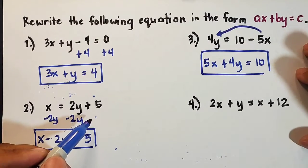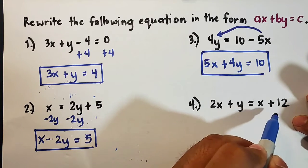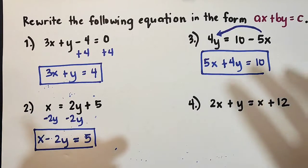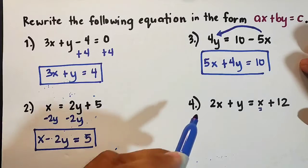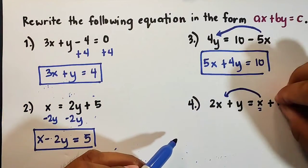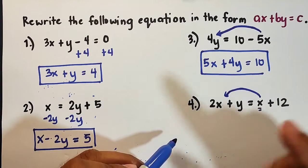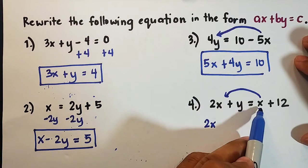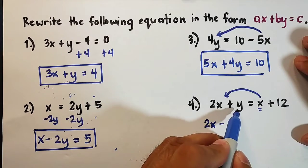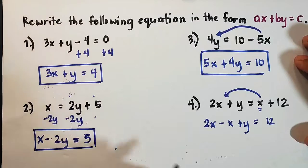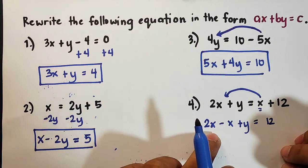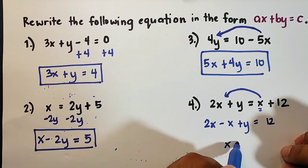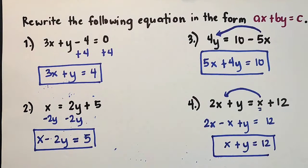For number four, we are given 2x plus y is equal to x plus 12. The 2x and y are properly placed on the left side; the main problem is the x variable on the right side. We transpose x to the left side — positive x becomes negative x. So we have 2x minus x plus y is equal to 12. Simplifying 2x minus x gives us x, so the standard form is x plus y is equal to 12.